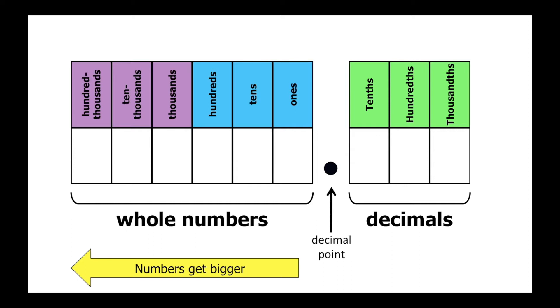Just as whole numbers continue to get bigger as they move to the left, decimal numbers continue to get smaller as we move to the right. Let's look at an example.